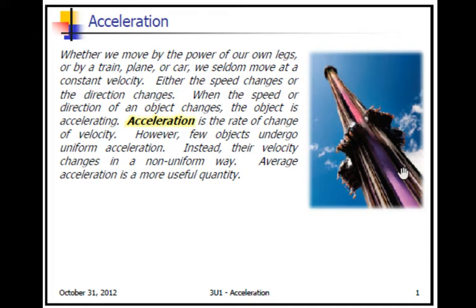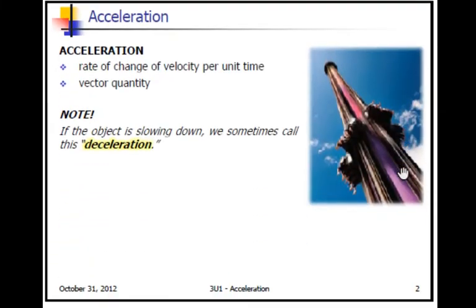Acceleration is the rate of change of velocity. It's not often that we see uniform acceleration. We often see acceleration changing in a non-uniform way. But we usually use average acceleration in introductory physics courses. Acceleration is the rate of change of velocity per unit time, and it is a vector quantity. You might have heard the term deceleration. That is the slowing down of an object. That is really just a negative acceleration, but both terms are acceptable.